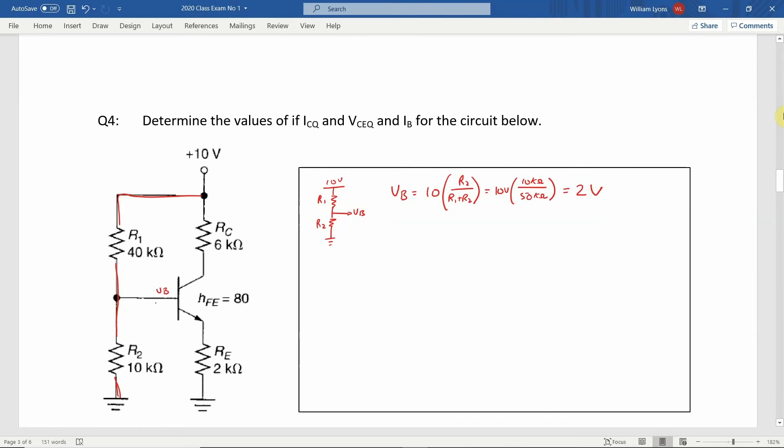We can state that the voltage between the transistor base and emitter, VBE, is equal to 0.7V. Using this, we can calculate the value of VE by subtracting the voltage drop VBE from the voltage at VB, which in this case results in a value of 1.3V for the voltage at the emitter VE. We can now note the emitter voltage VE is equal to 1.3V on the diagram.